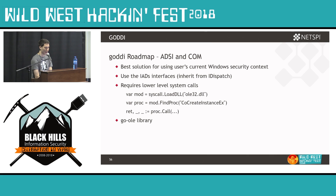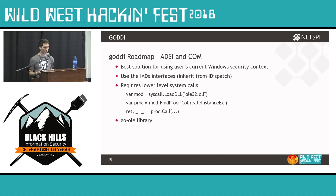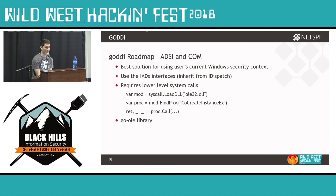In terms of the roadmap for Gadi, I'd like to see if we can make it use the user's current Windows security context. This would be done through COM objects in Go — tapping into those IADS interfaces, creating COM objects in Go and those interfaces to dump this information. This would require looking at lower-level system calls through Go's syscall library: load DLL, find procedure, call that procedure, and create custom structs to save information. There is a library that does this in Go already, but it doesn't support the functionality I'm looking for.